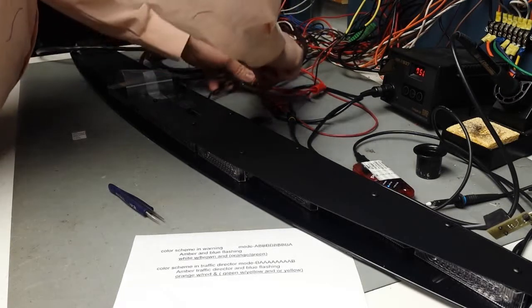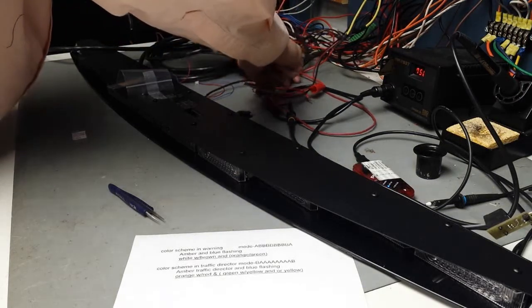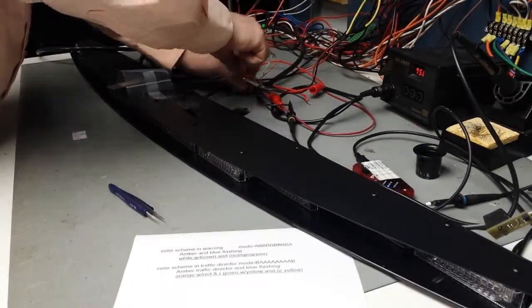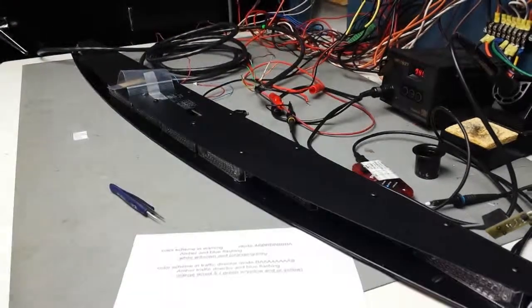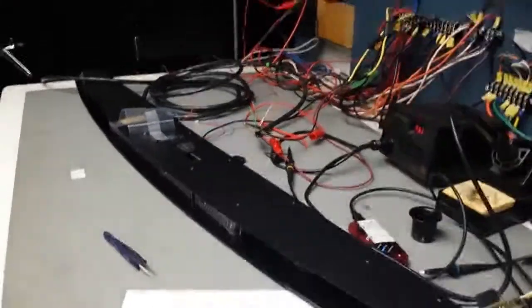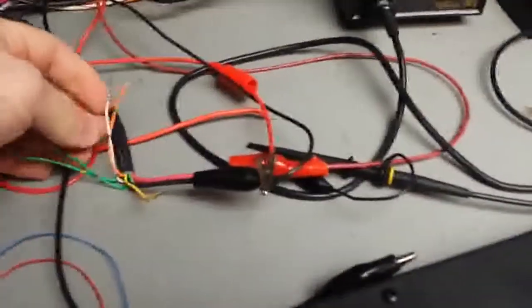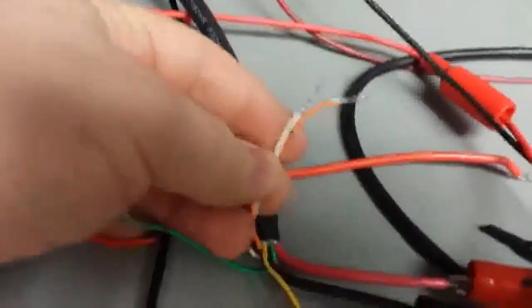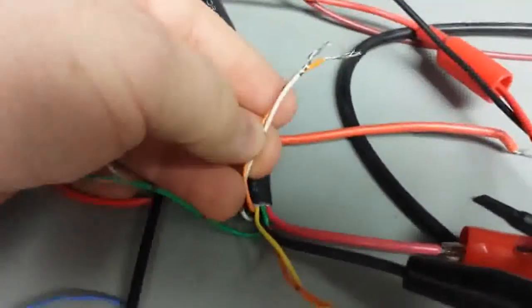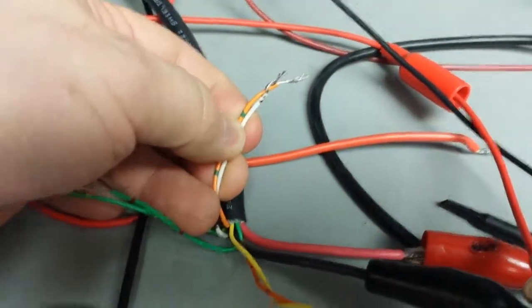I'm going to twist those wires together, because they are all set. So, now you can see the orange with green, and white with brown is going to enable your warning pattern.